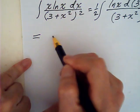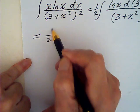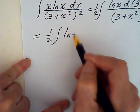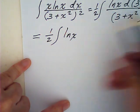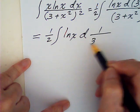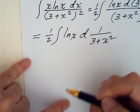This could be written as one half integral log x, this could be written as d of 1 over 3 plus x squared.